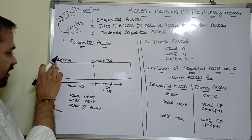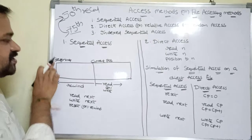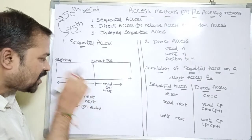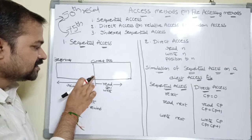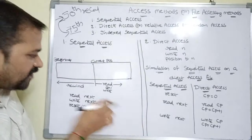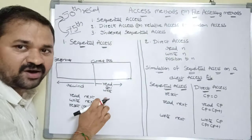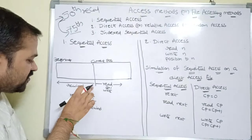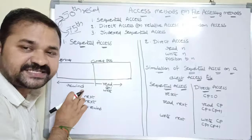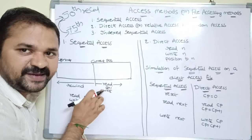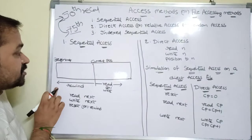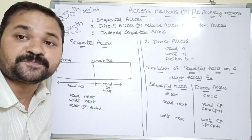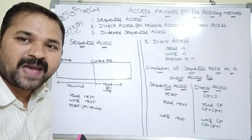Let us take the diagram. This is the beginning of the file, and this is our current position — the head. After that, we have to perform either read or write operations record by record. We can also perform the rewind operation, which means reset — moving to the beginning position of the file. The best example for sequential access is magnetic tape, where all records are accessed one by one.